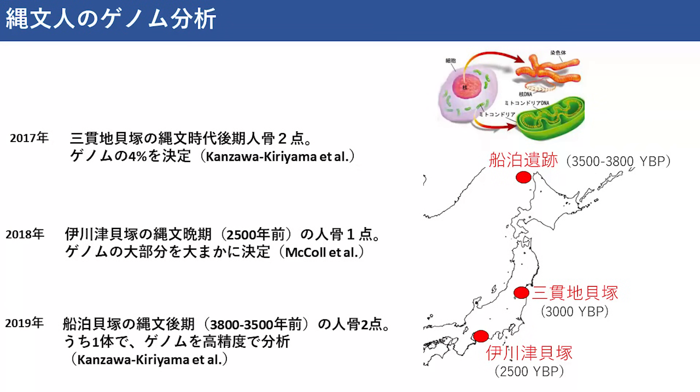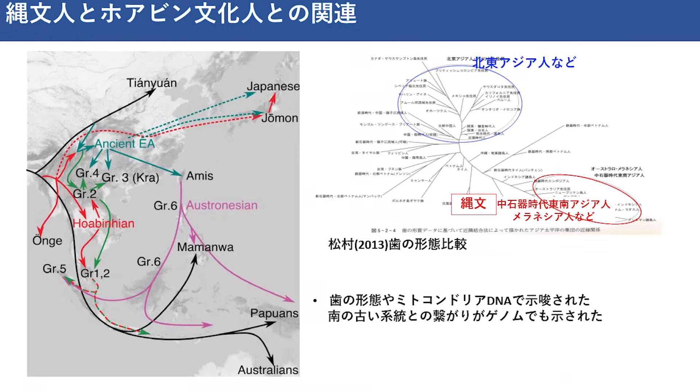これまでに3つの論文が縄文人のゲノムを報告しています。最初の研究が2017年に行われており、福島県の三貫地貝塚から出土した縄文時代後期の人骨2点を用いた研究です。この研究ではゲノムの4%を決定しており、系統分析の結果、縄文人が系統的にかなり古く分岐している東アジアの基礎集団であることが分かってきました。2018年のマッコル・エトアルでは縄文人のゲノムの大部分を大まかに決定しました。